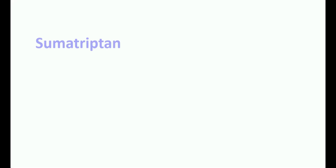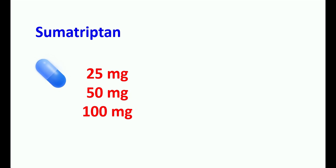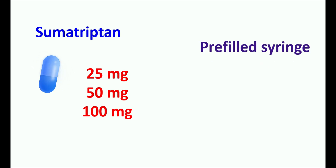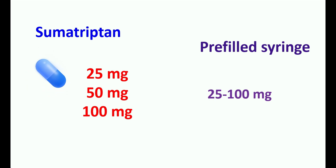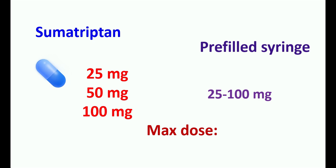Now let us see the doses of this medication. Sumatriptone is available as tablets at different strengths such as 25 mg, 50 mg, and 100 mg. It is also available as a nasal spray for intranasal use and as a pre-filled syringe for subcutaneous injection. As a tablet, it can be used at a dose range of 25 to 100 mg — the dose depends on severity of headache and may be individualized. However, per each dose, sumatriptone should not be taken above 100 mg as it is potentially dangerous and significantly affects cardiac function. The maximum dose is 200 mg per day by oral route.